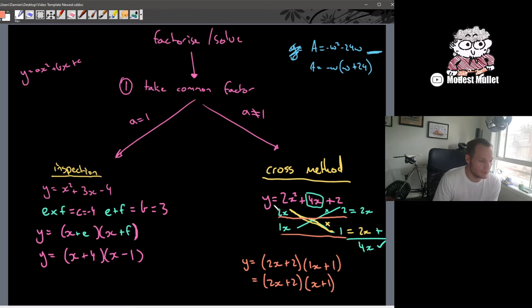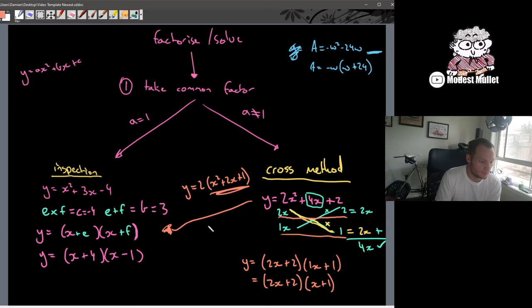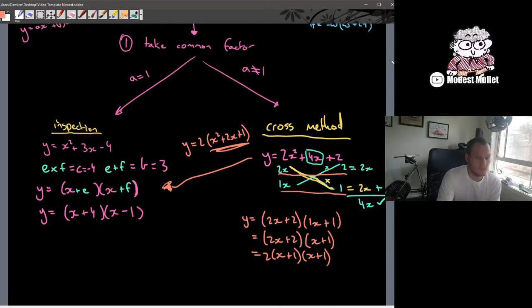Now I've just realized I broke the cardinal rule with this cross method one just because I wanted to show the method. Looking at that, I didn't try and do what I could straight off the bat. In this case I could have taken a common factor of 2 out of that quadratic and then used inspection on what was inside the brackets. I could have instead written y equals 2 bracket x squared plus 2x plus 1 and then done inspection on this inside bit, which would have turned out as 2 bracket x plus 1 bracket x plus 1.